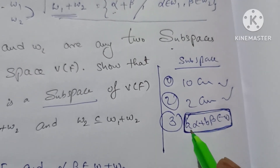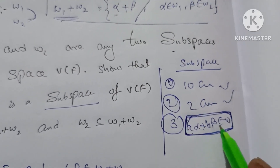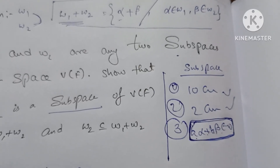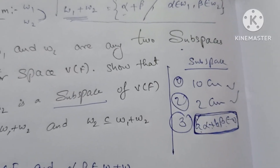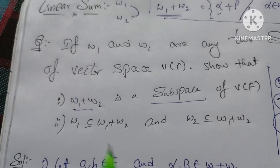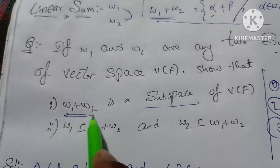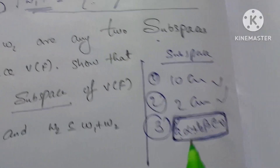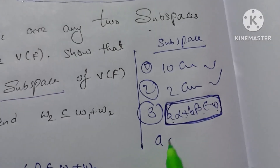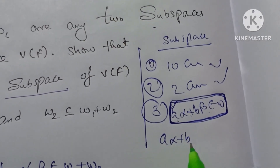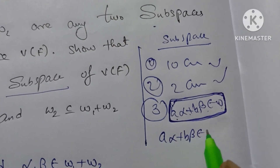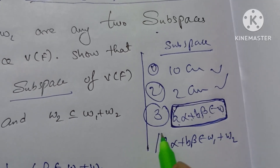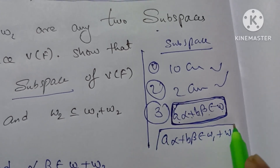Let's talk about a·alpha plus b·beta belongs to W. We can see how the subspace is W1 plus W2. We can see that a·alpha plus b·beta belongs to W1 plus W2, which means it is a subspace.